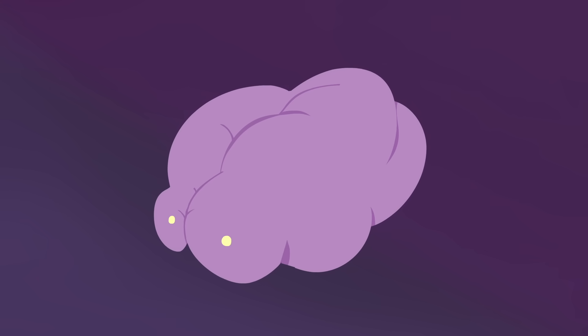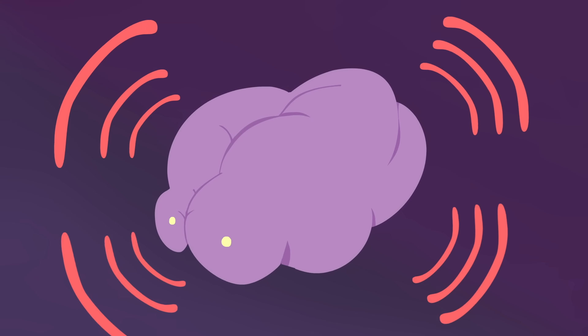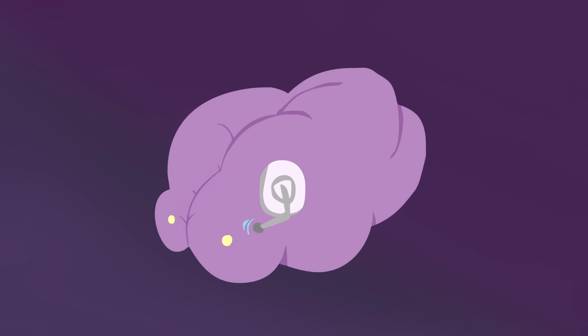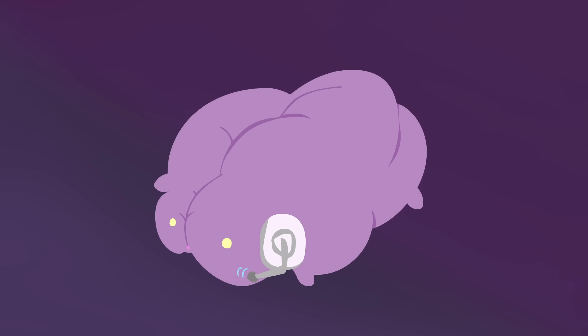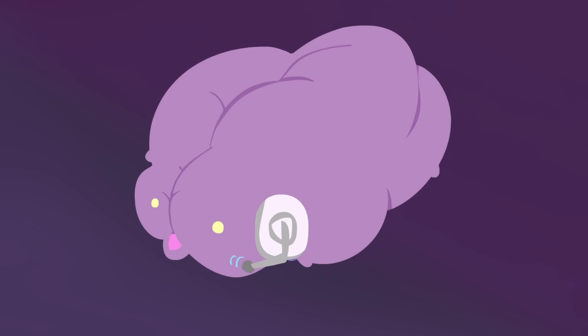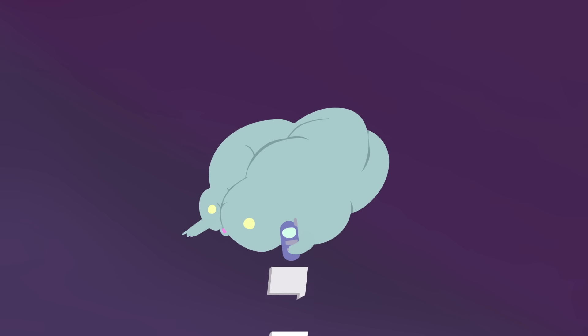When your brain senses stress, it activates your autonomic nervous system. Through this network of nerve connections, your big brain communicates stress to your enteric or intestinal nervous system.